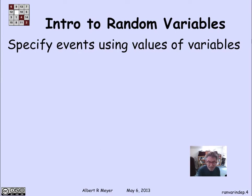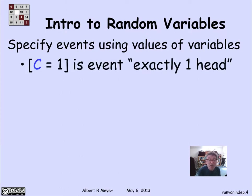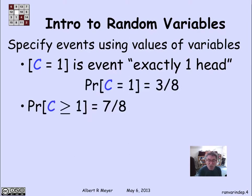Once I have these random variables defined, one convenient use is to use them to define various kinds of events. So the event that c equals 1 is a set of outcomes where the count is 1 — this is the event of exactly one head. There are three possible outcomes among the eight outcomes, so it has probability 3/8. I could also talk about the event that c is greater than or equal to 1, which occurs when there is at least one head. The only time c is not ≥ 1 is when you have all tails, so there is a 7/8 chance — seven out of eight outcomes involve one or more heads.